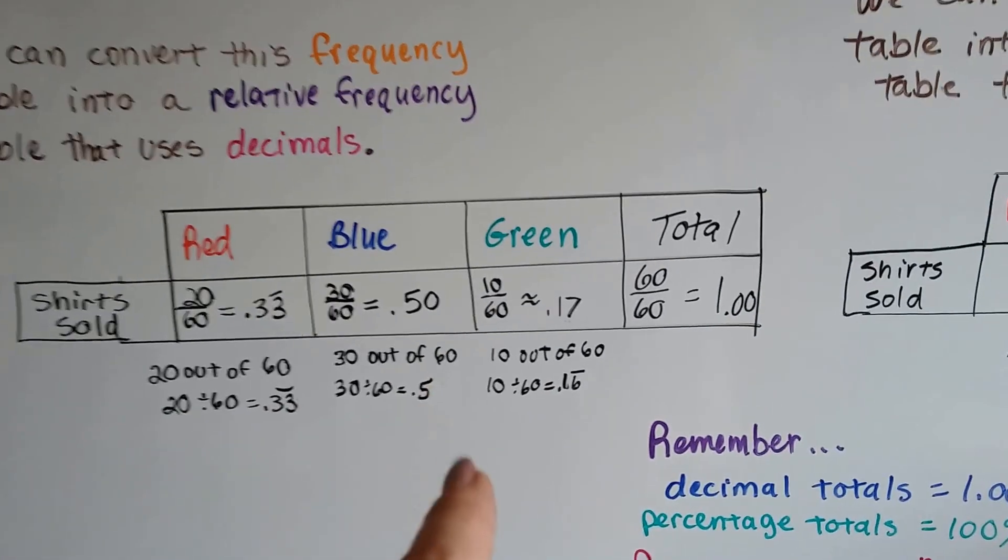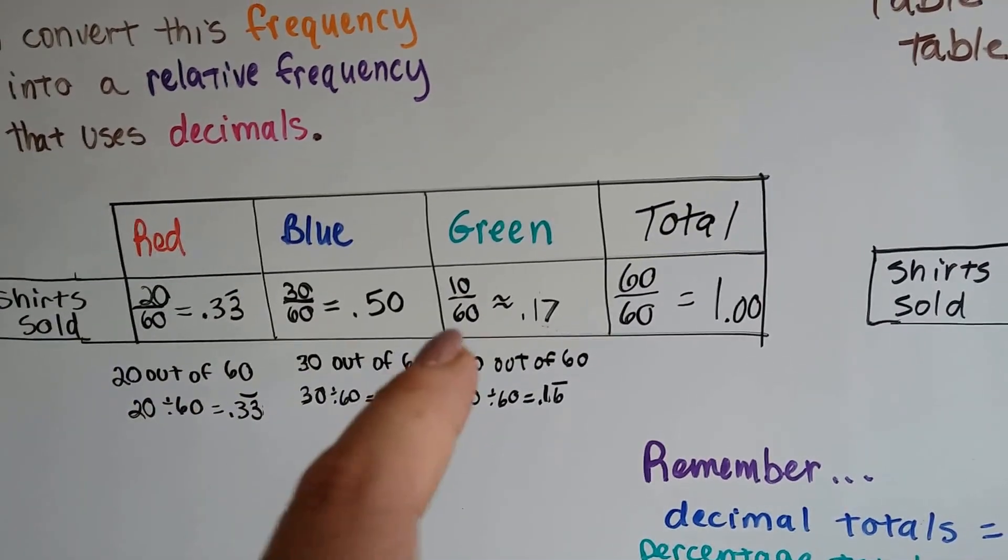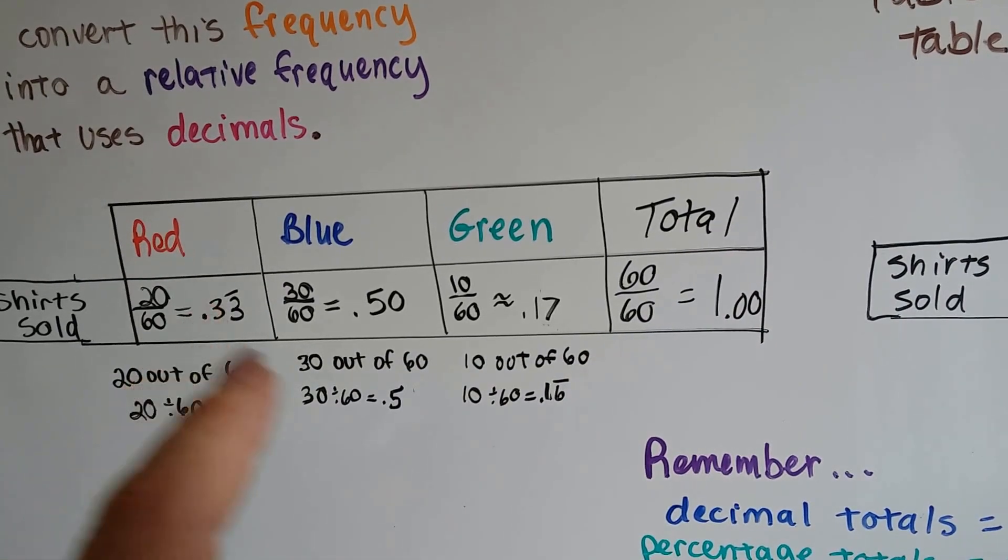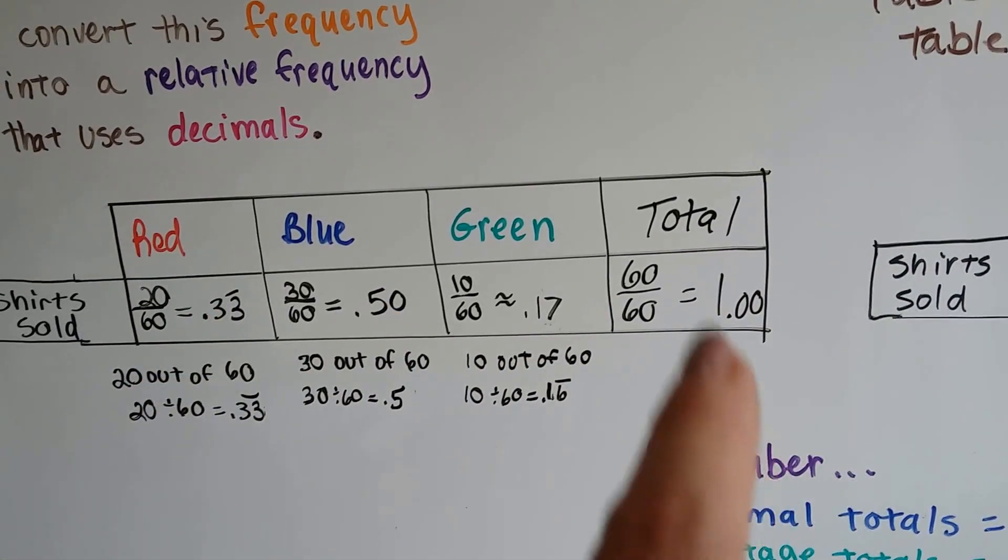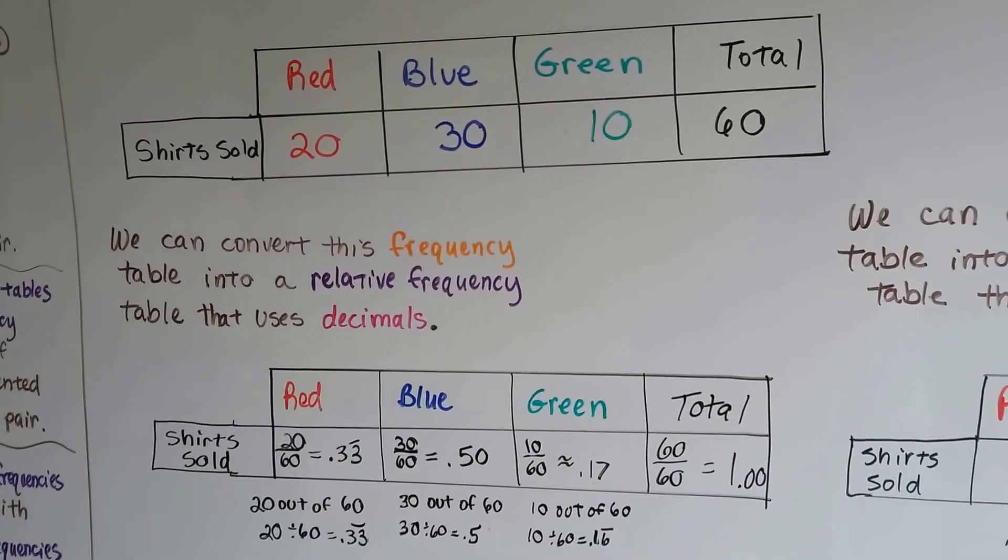And that should give us 60 over 60. 20 and 30 and 10 equals 60. And we slide the denominator over. And when we add the 33, the 50, and the 17, we get 1.00. See? We convert it into decimals from just being a frequency table.